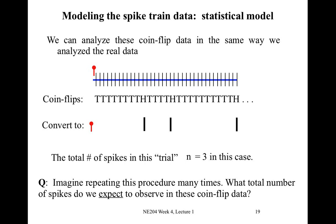Perhaps we can imagine repeating this procedure many times. We can ask questions like: what total numbers of spikes do we expect when we observe these coin flip data? We generated a single sequence of coin flips and found three spikes. If we were to repeat this procedure over and over again, how many spikes would we expect to see? Would it always be three? Would we have some variability around three? Would we sometimes see one, sometimes see ten? We'd like to answer this question: how many spikes do we expect to observe when we generate these coin flip data?